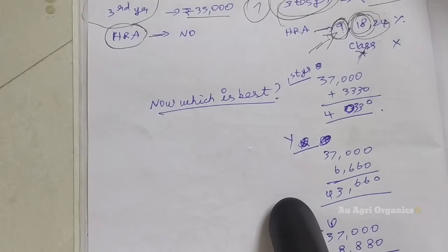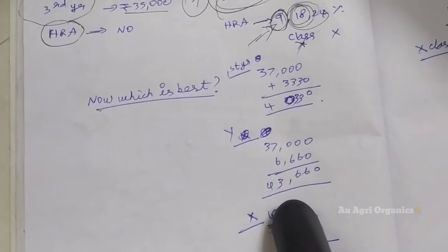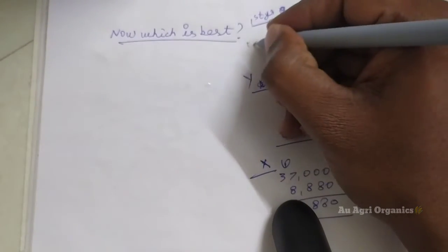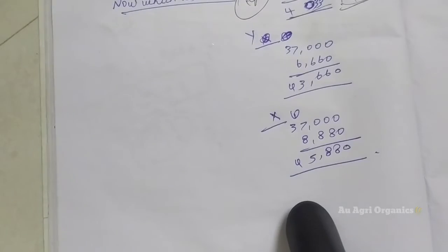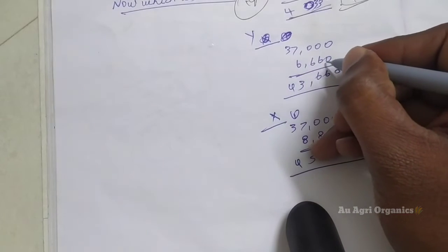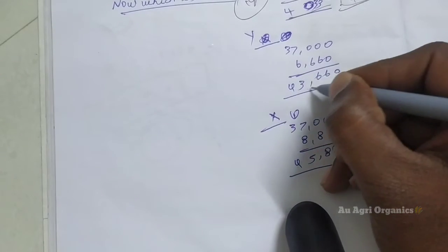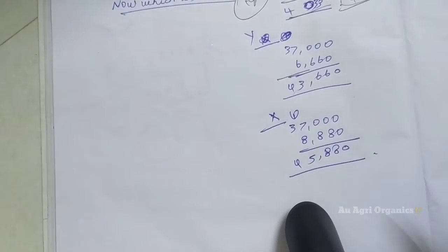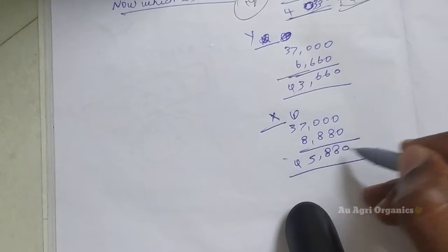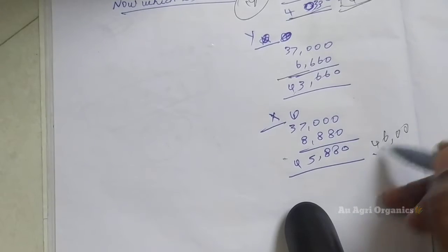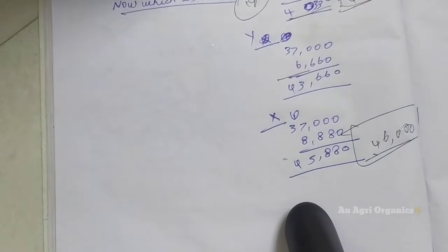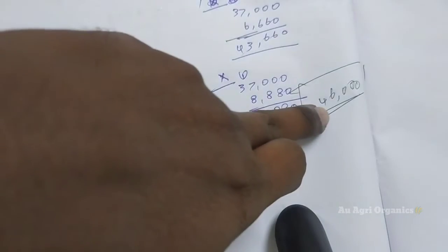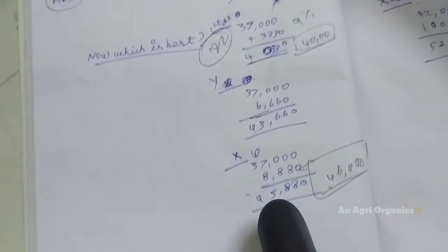Now little you can come to your conclusion which fellowship is best. But here I will explain another one thing. So for the first year, second year. During the first year, second year, you can consider this Y class city. You will get 6,660 Rupees HRA. So totally 43,000, nearly 44,000. If you are belonging to this X class city, you will get nearly 46,000 Rupees. But here you will get 31,000 only. So 15,000 you will get extra as compared to this ICAR.